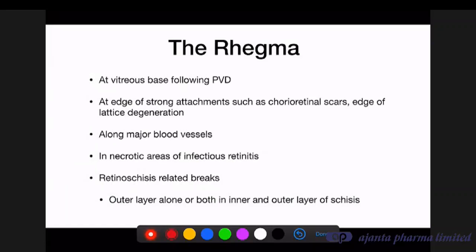A retinal tear can form when the vitreous detaches at the posterior vitreous base, which is not always a smooth continuous line — where it protrudes posteriorly, it can tear the retina. Tears can also occur at the edge of strong attachments such as chorioretinal scars or the edge of lattice degeneration. Along major blood vessels, strong attachment can cause a retinal tear with vitreous hemorrhage. In necrotic areas of infectious retinitis, the retina itself is necrotic and easily tears. Retinoschisis can have breaks in both inner and outer retinal layers.